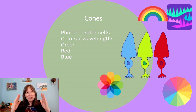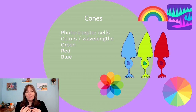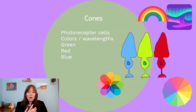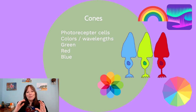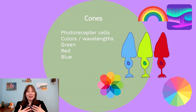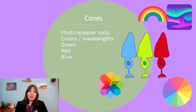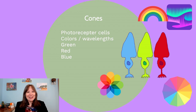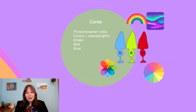Cones look similar to rods but the top photoreceptive portion is cone-shaped. Our cones come in at least three varieties: those more sensitive to blue, green, and red wavelengths of light. Some people may have a fourth type of cone, though that is still understudied. The blue cones fire in response to blue light, the green cones to green light, and the red cones to red light. These combinations give us rich color information.